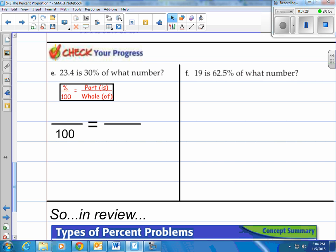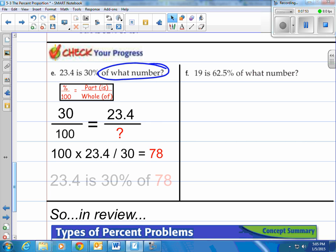Again, let's remember, percent goes over 100, and then the part is the is, and the whole is the of. So I'm looking at 23.4 is 30% of what number? So we're looking for the of what number. Of what number is the bottom, so we put the question mark there. 23.4 is going to be our is, and 30 is going to be our percent. And as you know, we cross-multiply, 100 times 23.4 divided by 30, we get 78. So 23.4 is 30% of 78.